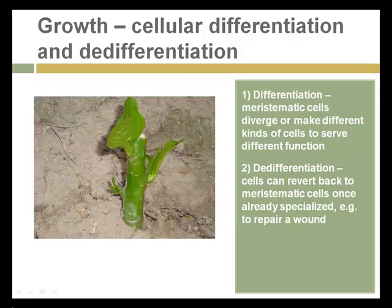Another aspect of growth is cellular differentiation and de-differentiation. You've all noticed that especially early in plant development, if the top of a plant breaks off, the plant will grow back. Those meristematic cells that we talked about last week diverge — or make different kinds of cells to make different functions. And they can revert back and form new tissue and sprout after they've been damaged in order to repair a wound or grow after damage has occurred.